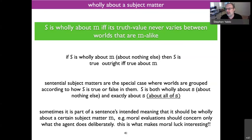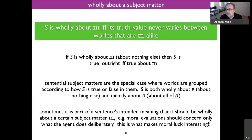Here's a separate notion — another relation between a sentence and a subject matter. A sentence is wholly about a subject matter M if and only if its truth value never varies between worlds that are M-alike. So if two worlds are just alike M-wise, then the sentence will be true in both of them or false in both of them.